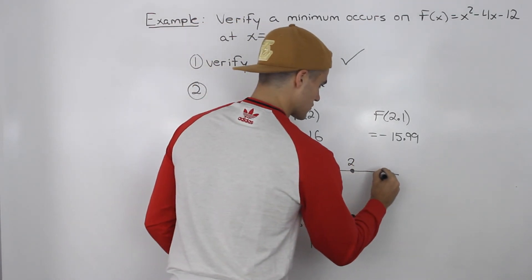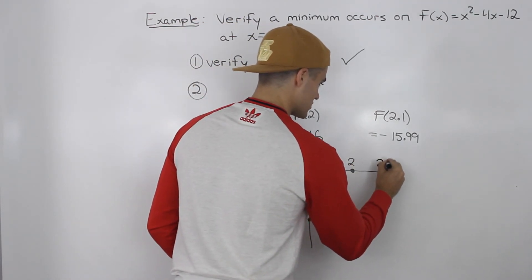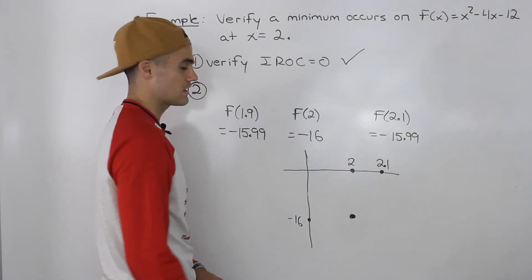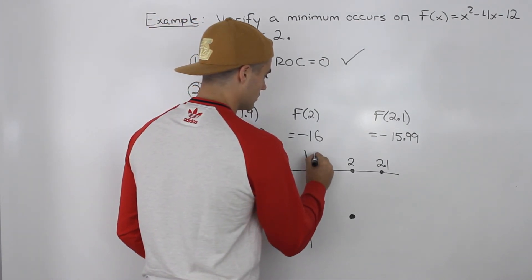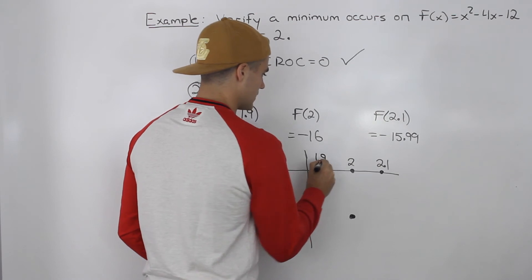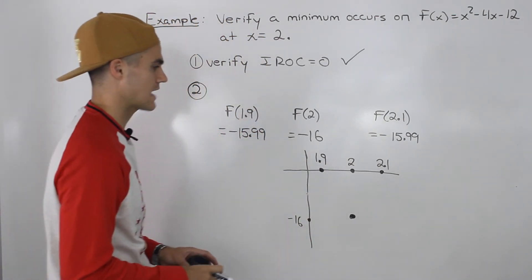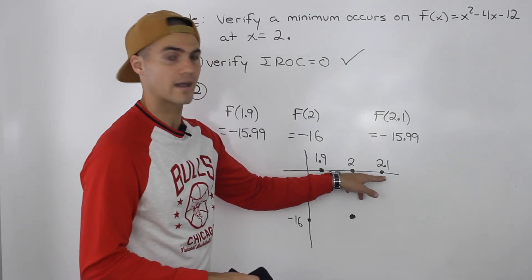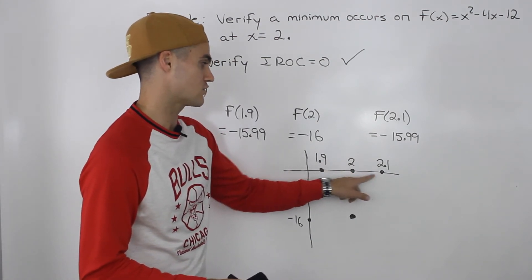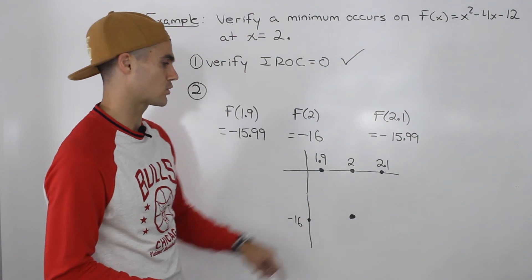So 2.1 let's say is over here. Notice how this is very zoomed in on the x-axis, this is not to scale at all. I'm just kind of trying to zoom in here so you see what is happening. So we got 1.9 and 2.1 x values to the left and to the right of that point that we are working with.